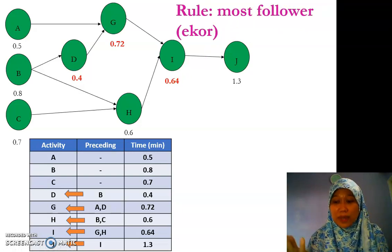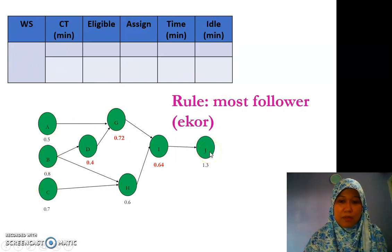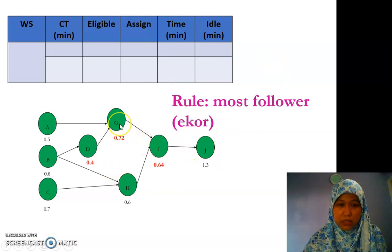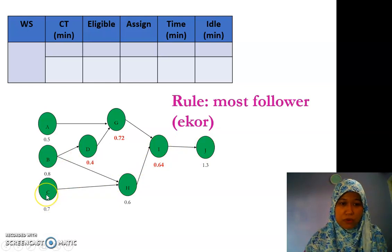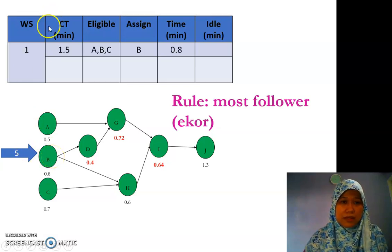We start by using the rules stated: most follower, which in this case is echo. So most follower is echo. For workstation number one, from A, B, and C we calculate how many tasks each one has as followers. For A it's 4, for B it's 5, and for C it's 4. So we start with B first because it has the most followers — 5 tasks following it.